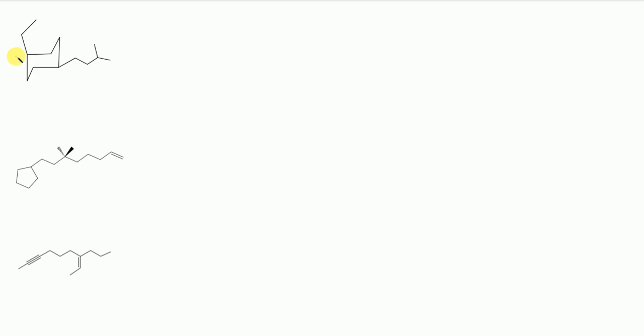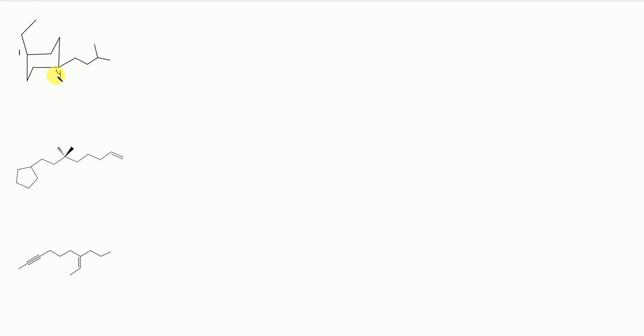Regardless of where I start numbering, I'll always get one, two, three, four. So the choice is whether my position one is on this carbon or the other one. Since the longest chain is not a consideration here, I jump straight to alphabetical ordering. I have an ethyl group and a propyl group. E comes before P, so I start my one over here and four over here. Checking the key: one-ethyl and four-propyl, so we're on the right track.